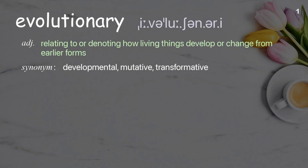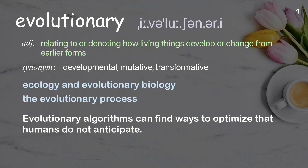Evolutionary: relating to or denoting how living things develop or change from earlier forms. Examples: ecology and evolutionary biology, the evolutionary process. Evolutionary algorithms can find ways to optimize that humans do not anticipate.